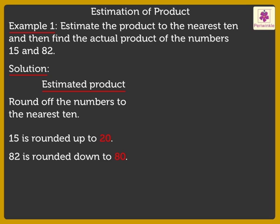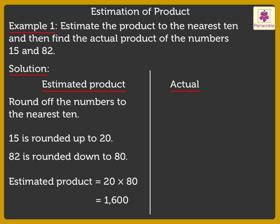Next, multiply the numbers obtained. Thus, the estimated product is equal to 20 into 80, which is equal to 1,600.